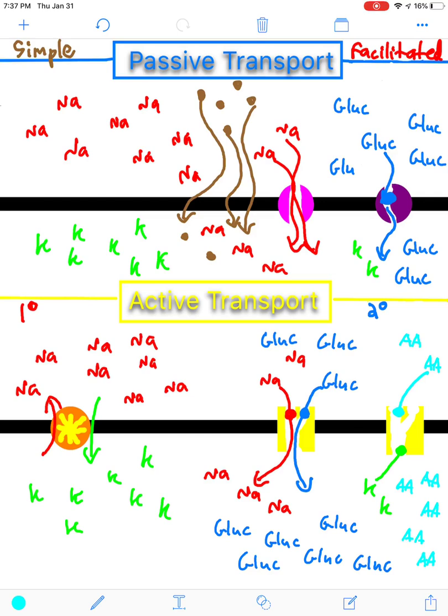And what you end up with are the two molecules going in opposite directions. Amino acids will be moved inwards, where there's already a lot of amino acids. And potassium moves down its gradient. So, there's an antiporter in which the two molecules, potassium and amino acids, move in opposite directions.